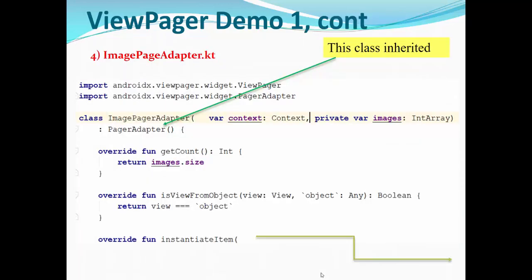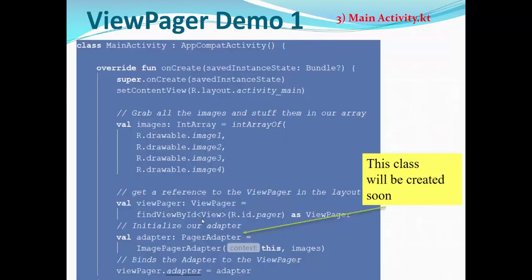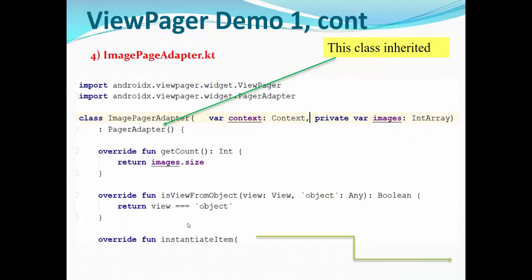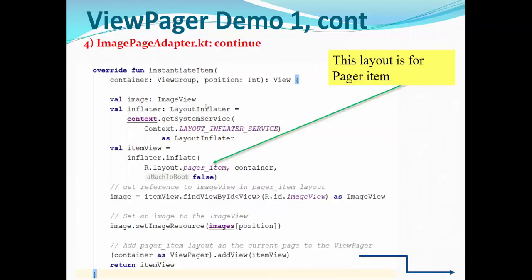So what is ImageAdapter? This class is inherited from PageAdapter. The most important function is GetCount that returns the size of the set of images. So the set of images is basically an array. The next function is ViewFromObject, connecting view and object. The next one, InstantiateItem, actually instantiates here, inflates layout.